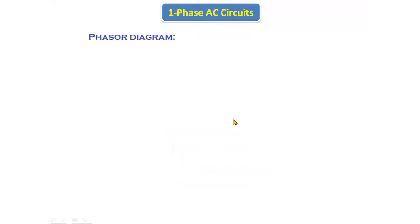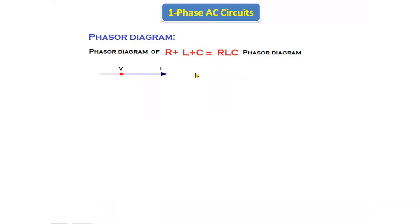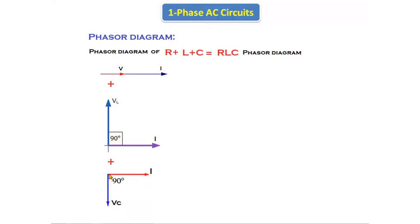Next, we will see the phasor diagram of the RLC series circuit. In the phasor diagram, we combine the phasor diagram of R, the phasor diagram of L, and the phasor diagram of C. In the pure resistor, voltage and current are in the same phase. In the inductor, current lags the voltage by 90 degrees. In the capacitor, current leads the voltage by 90 degrees. If we combine all three, we get the phasor diagram of RLC.